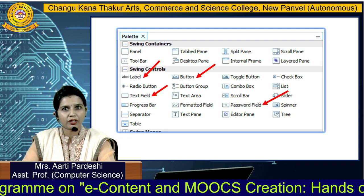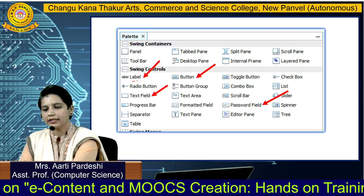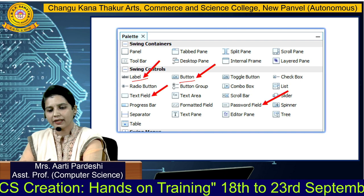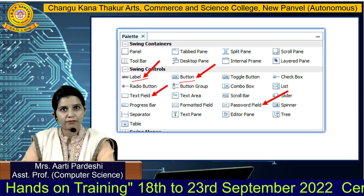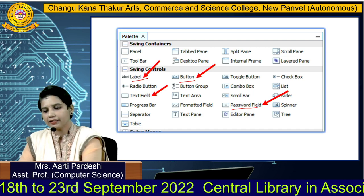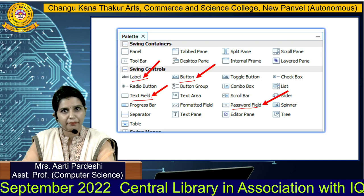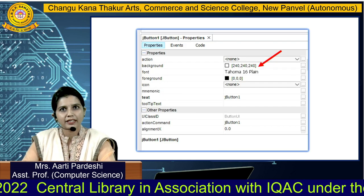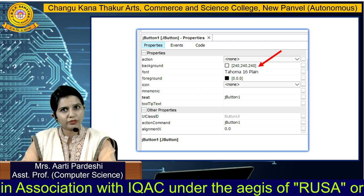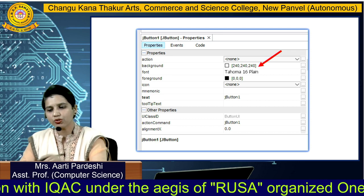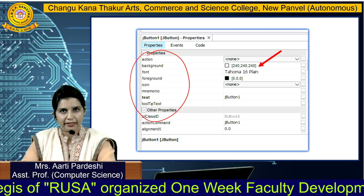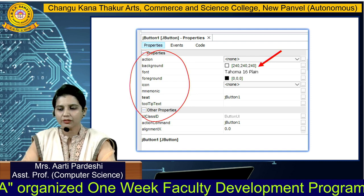From the GUI frame, we have taken some labels — that is for Username, Password, and Trouble in Login. Then next are buttons like Sign Up, Login, and Forgot Password. A password field is for entering the password, and a text field is to enter the username. Now we will see if we add a button — what are the properties? These properties are common to all GUI components, like button, text field, and password field.